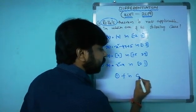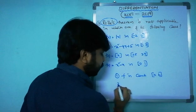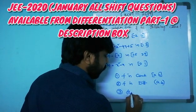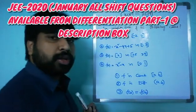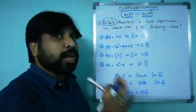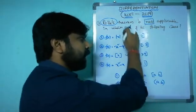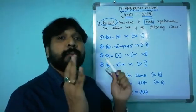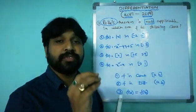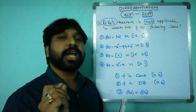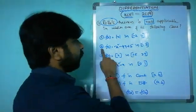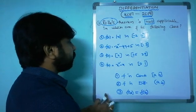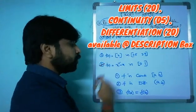Rolle's theorem requires three conditions: (1) f is continuous on the closed interval [a, b]; (2) f is differentiable on the open interval (a, b); and (3) f(a) = f(b). Since options 2 and 4 are polynomials, polynomials are continuous and differentiable everywhere.